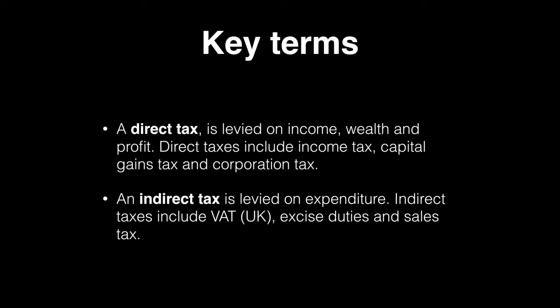An indirect tax is levied on expenditure. While it is collected from sellers, sellers will often pass some of this tax on to the buyers of their products. How much is passed on to consumers is called consumer incidence, and the portion that is paid by the producer is called producer incidence. We'll examine this shortly.